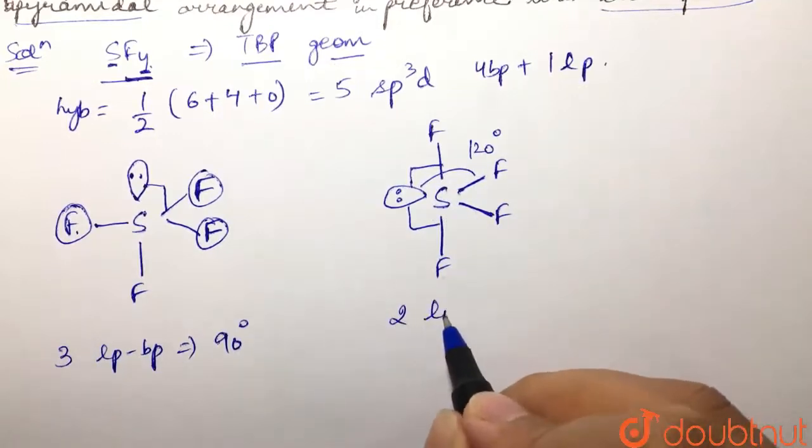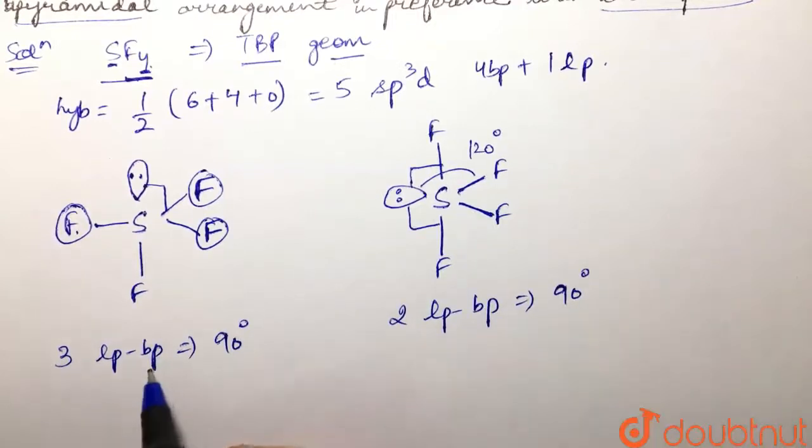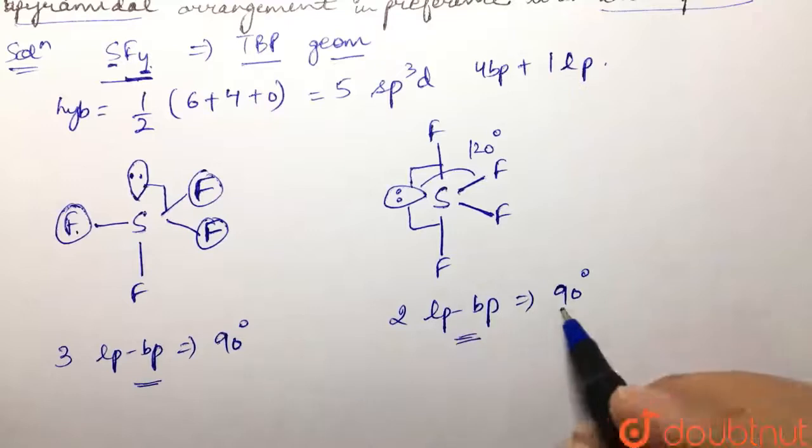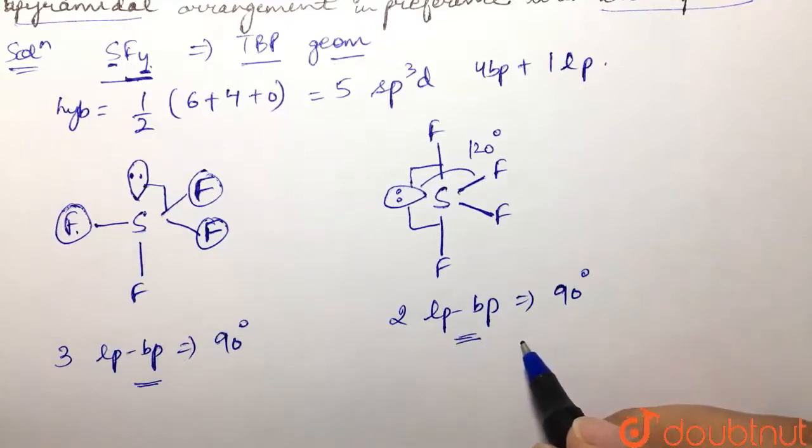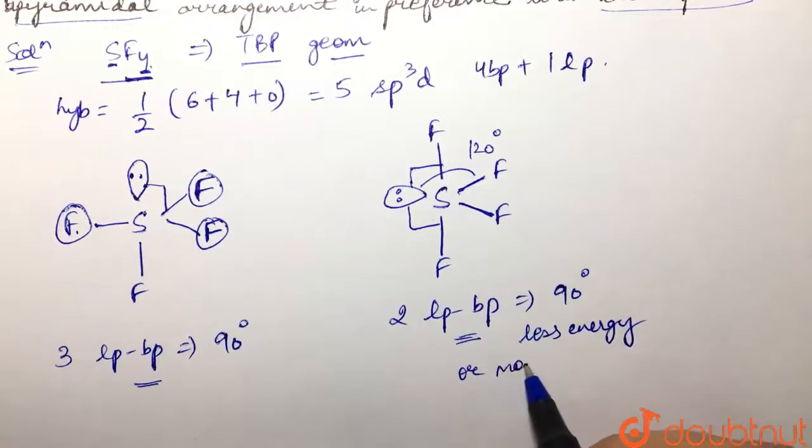So over here repulsion is more, over here repulsion is less, so this would have basically less energy or more stability.